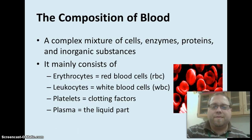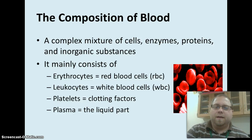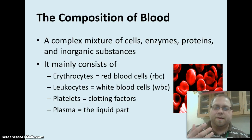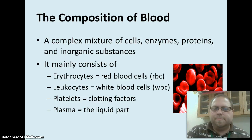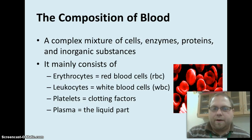So first thing, composition of blood, which you all should be researching. Blood itself is a mixture — it's not just its own particular substance. It is a mixture of cells, enzymes, proteins, and inorganic substances. When we talk about inorganic substances, we're talking about things like metals, like iron, and the hemoglobin.